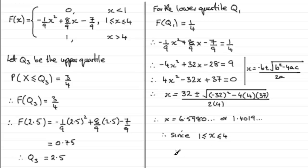So therefore, since x lies in that interval 1 to 4 inclusive, then what we have is this value here that must be Q1. So therefore Q1, our lower quartile, is equal to 1.4019 and so on, and we could say round that to 2 decimal places, so it's going to be equal to 1.40 to 2 decimal places.